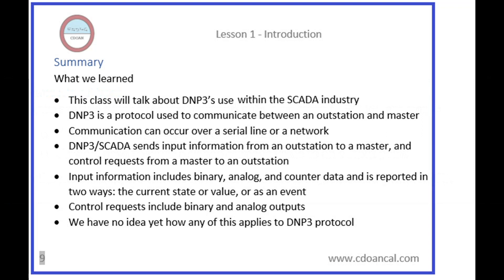So that's the end of this brief introductory lesson. What have we learned? This class will talk about DNP3's use within the SCADA industry. DNP3 is a protocol used to communicate between an outstation and master. Communication can occur over a serial line or a network. DNP3 SCADA sends input information from an outstation to a master, and control requests from a master to an outstation. Input information includes binary, analog, and counter data, and is reported in two ways: the current state or value, or as an event. Control requests include binary and analog outputs.